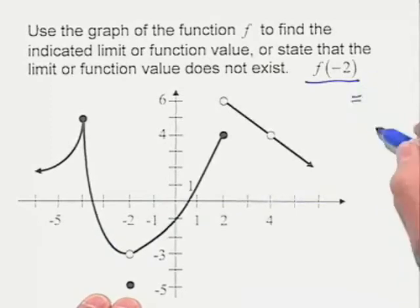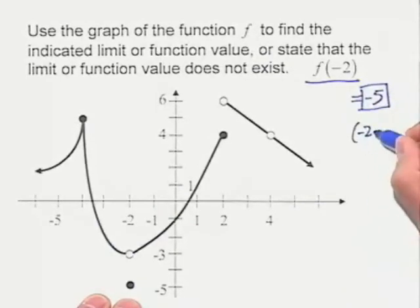So at this point, we have the function value of negative 5. In some cases, it's good to think of this as being the ordered pair negative 2, negative 5.